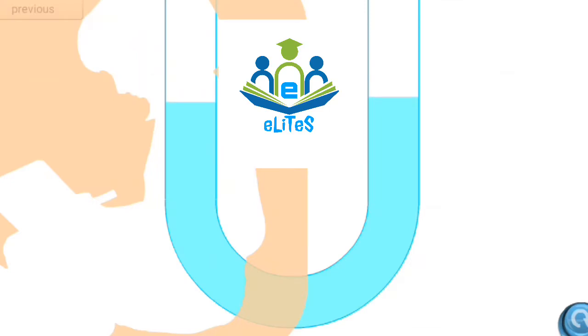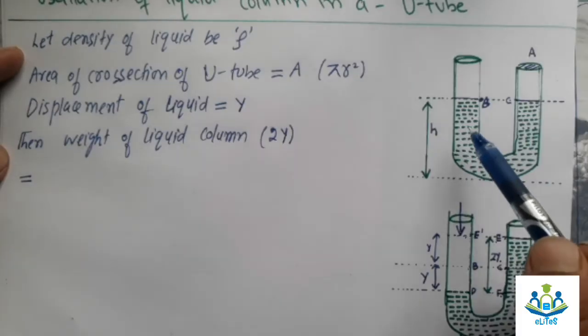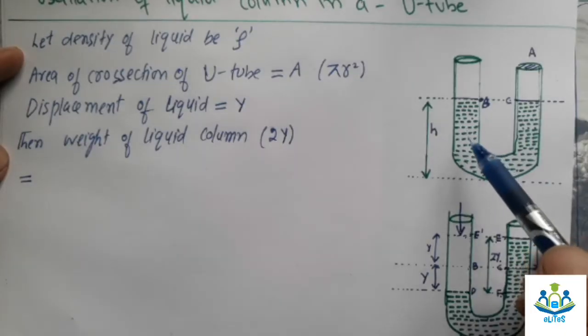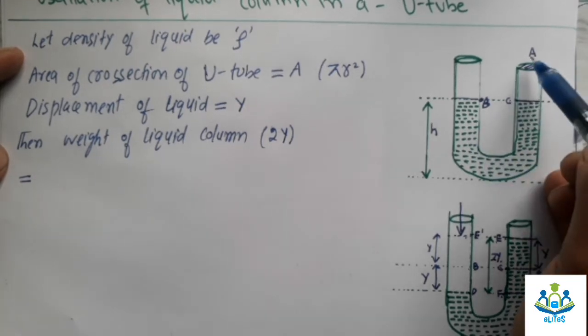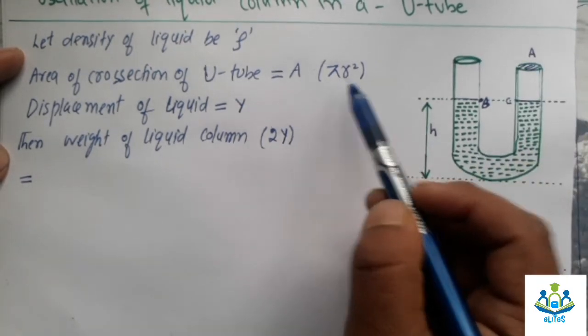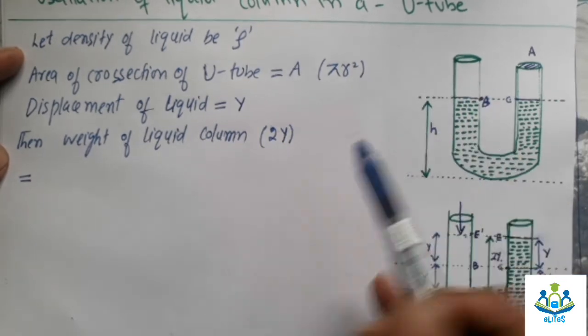We blow the air through one of the columns of the liquid, it will start oscillating. So the density of the liquid is ρ and the area of cross section is A, which is actually πr² or we just write it as A.